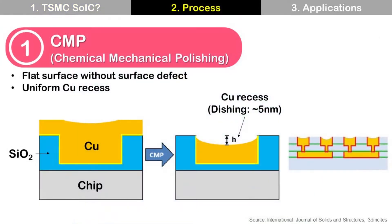It is believed that TSMC SOIC uses copper-to-copper hybrid bonding, even though TSMC did not confirm it. So in order to explain the TSMC SOIC process, I will explain the copper-to-copper hybrid bonding process.